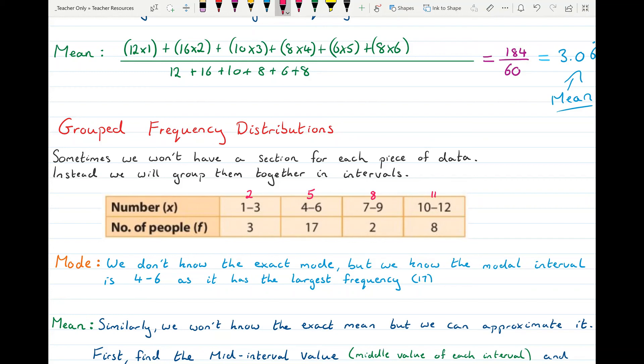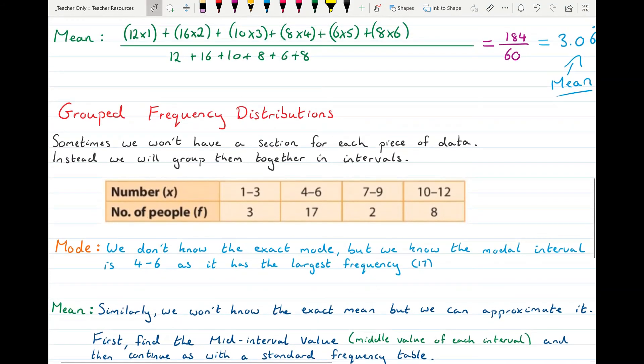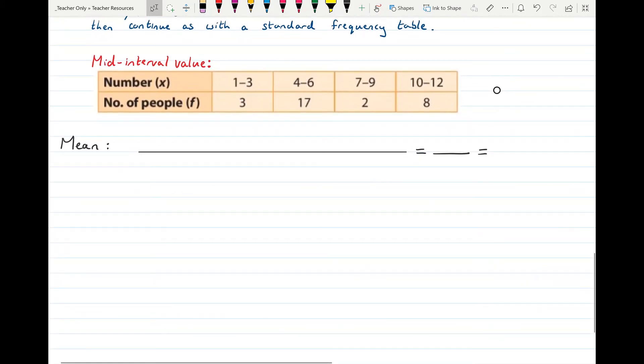So there are mid-interval values and using them we'll be able to calculate the mean, which we're going to do down here. So I'm going to write my mid-interval values along the top in between them. So the middle interval value as we said was 2, 5, 8 and 11. And just as before then we fill it out as a frequency table.